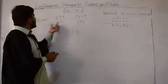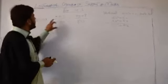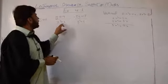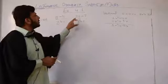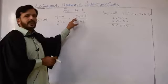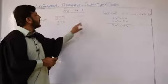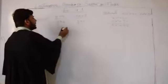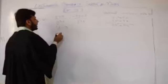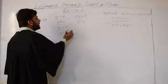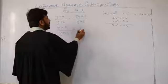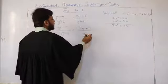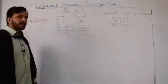The given question is question number 4, second part: (y + 9) divided by (y square + 3), and the other rational expression is minus (7y + 7) divided by (y square + 3). We write this in horizontal form: (y + 9)/(y² + 3) + (−7y + 7)/(y² + 3). I have written this down.